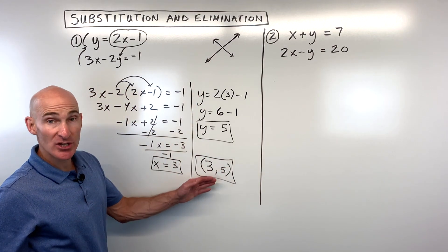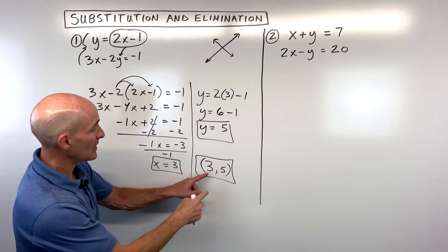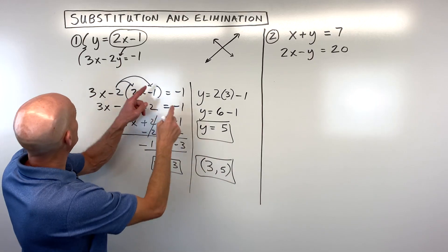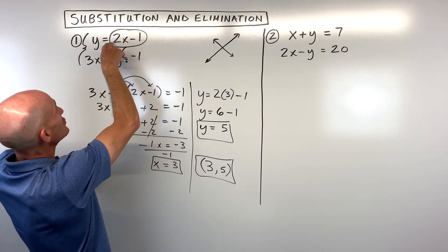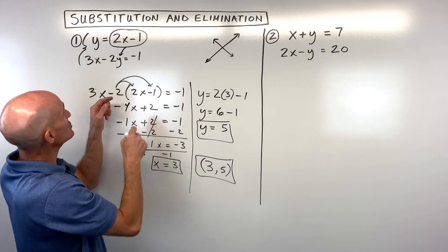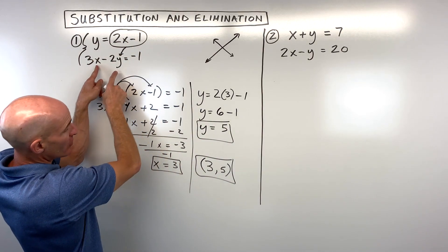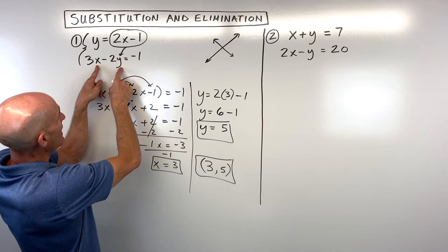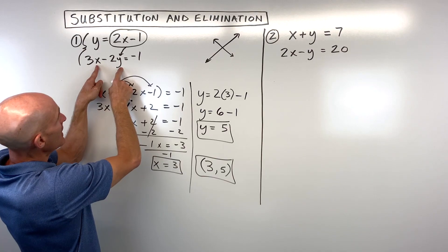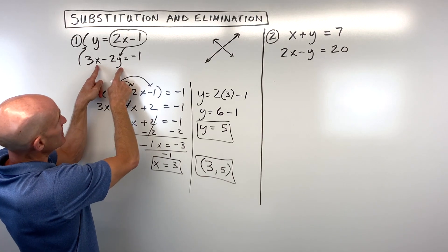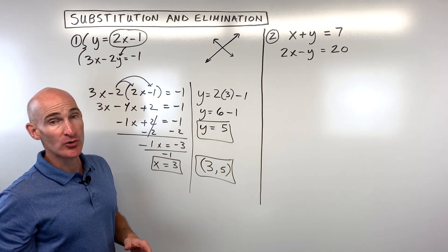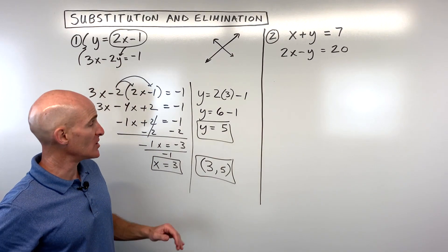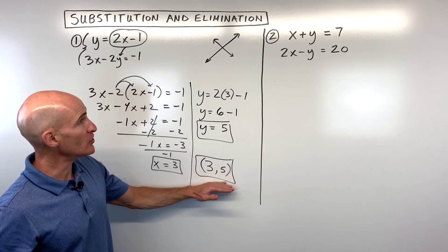Now we need to solve for the y-coordinate. If we take 3 and put it back in for x in the top equation — since we already have y by itself — we get y equals 2 times 3 minus 1, so y equals 6 minus 1, which equals 5. So the final answer is the coordinate (3, 5). That's where these two lines would intersect. You can check your work: put 3 in for x and 5 in for y, and it should make both equations true.